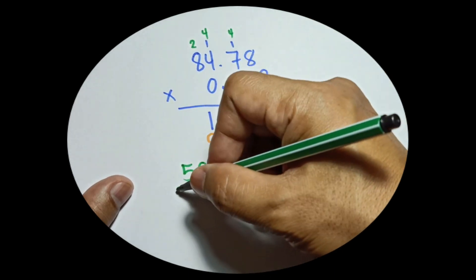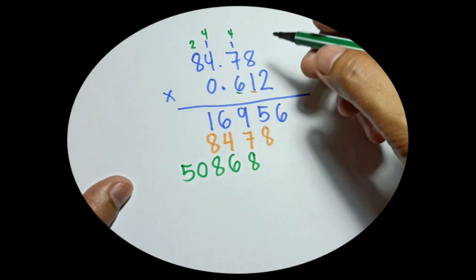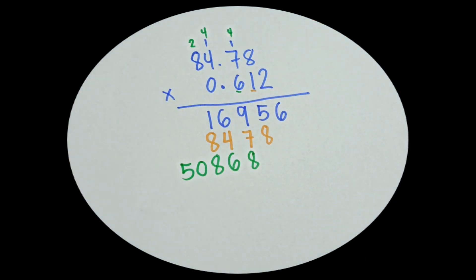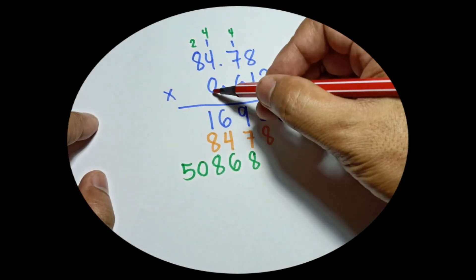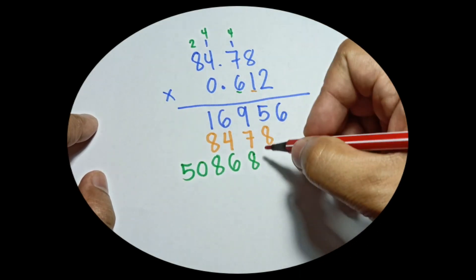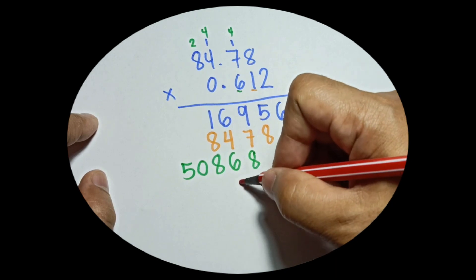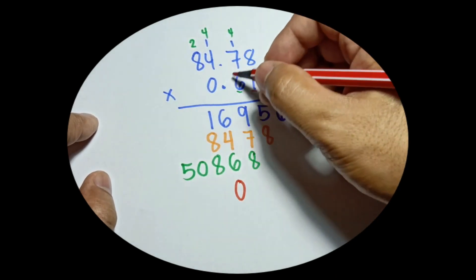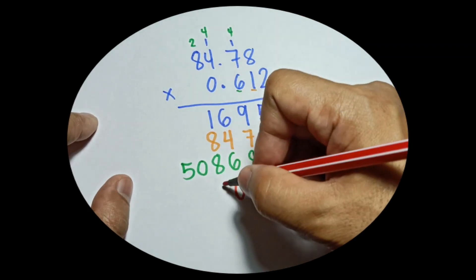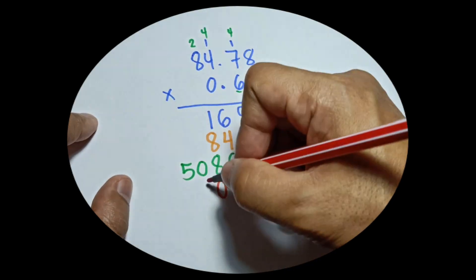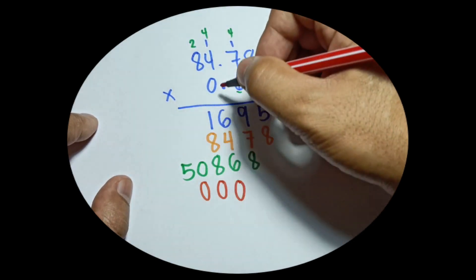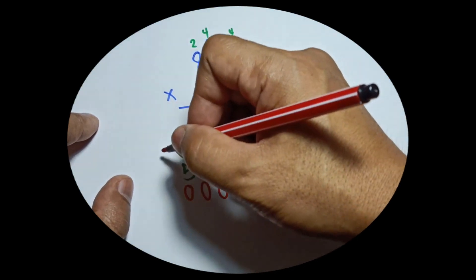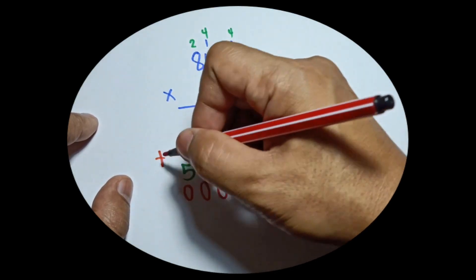For the fourth digit, which is 0: 0 times 8 is 0, write it on the fourth line. 0 times 7 is 0, 0 times 4 is 0, 0 times 8 is 0. Then add them all together.